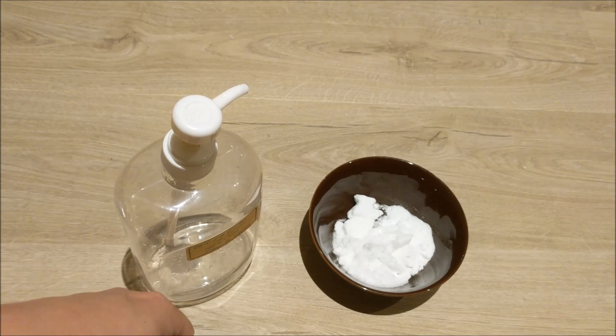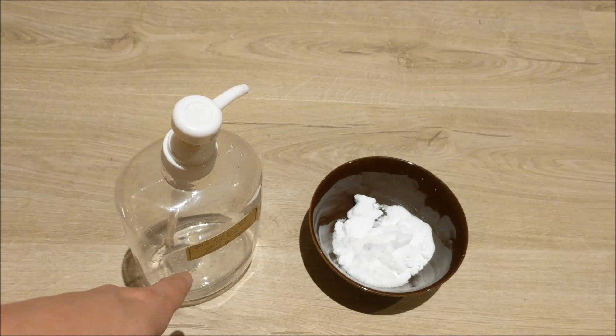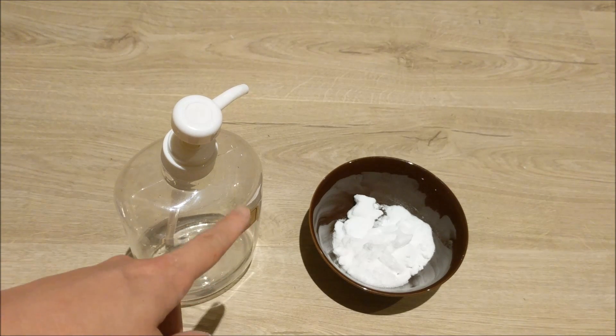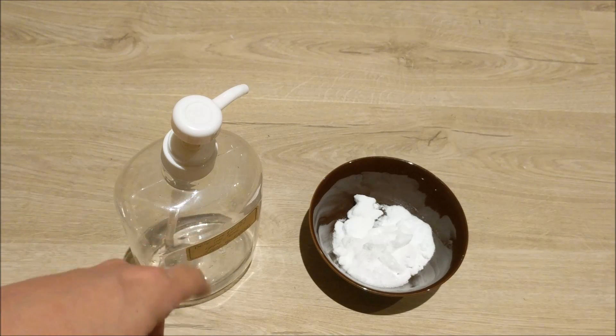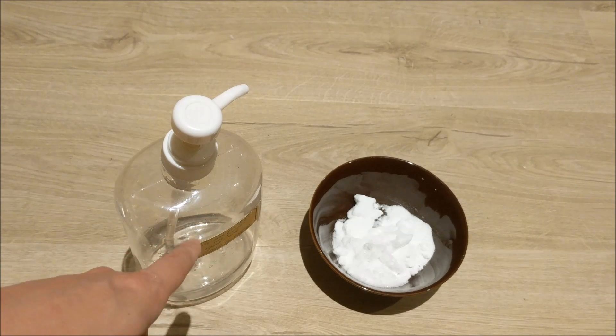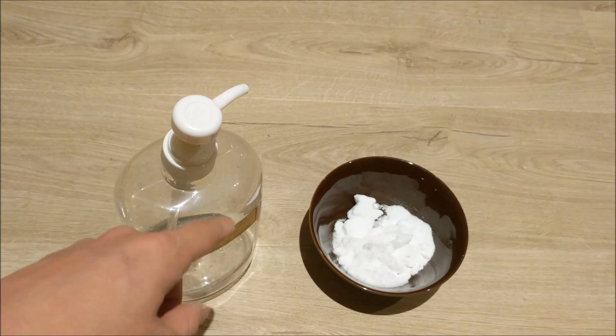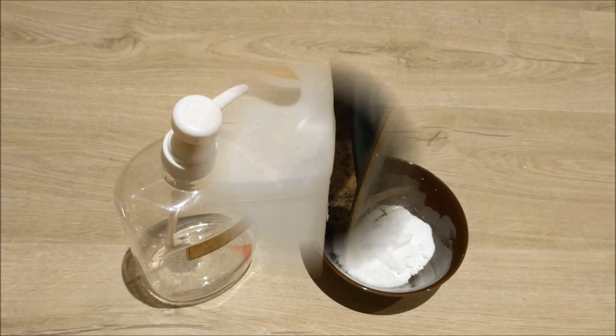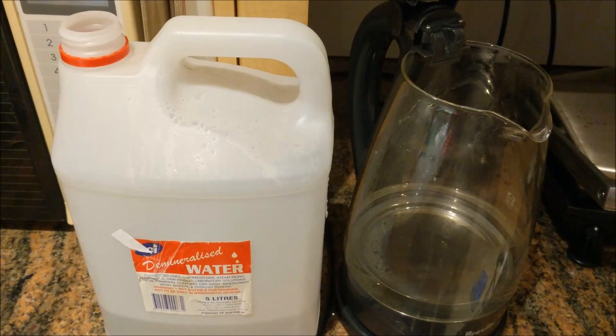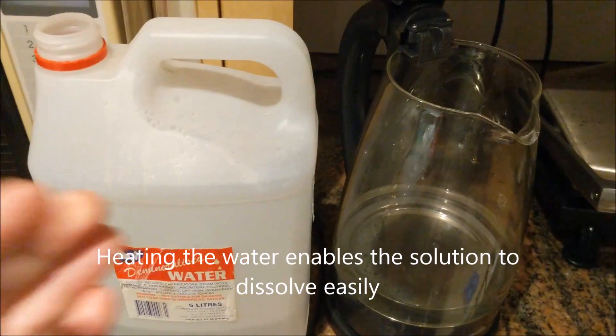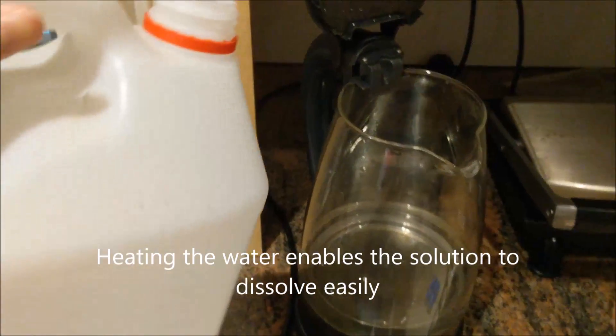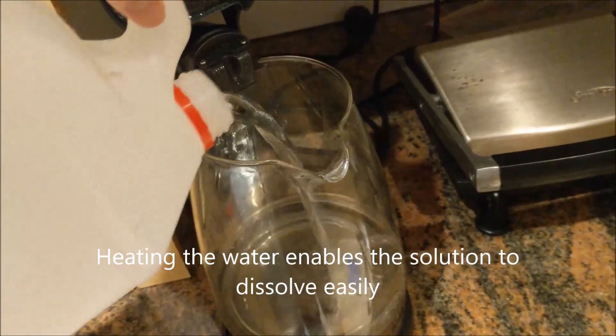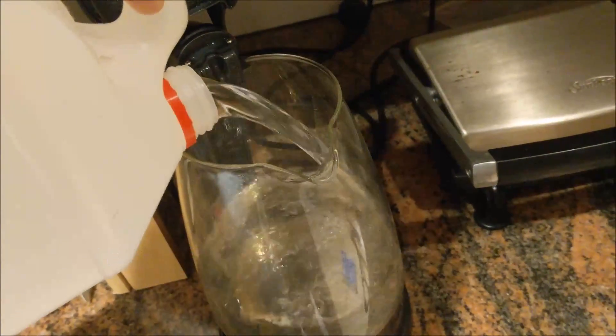Once you've done that, you want to fill that container up with your distilled water, so one liter of distilled water per powdered mix. What you want to do next is give one liter of demineralized water a good boil.